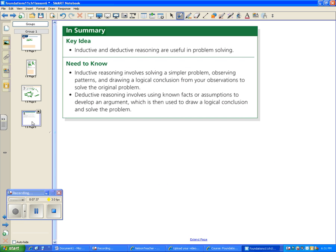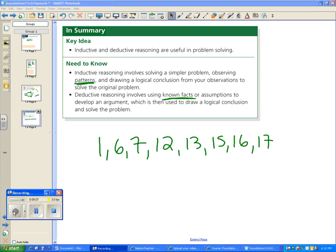What you need to know: inductive and deductive reasoning are useful to solve problems. Inductive reasoning involves solving a simpler problem, observing patterns—that's a keyword—and drawing a logical conclusion from your observations to solve the problem. Deductive reasoning involves using known facts or assumptions to develop an argument, which is then used to draw a logical conclusion and solve the problem. Your assignment for the section is 1, 6, 7, 12, 13, 15, 16, and 17. Good luck.